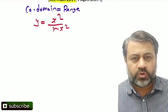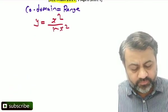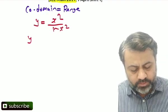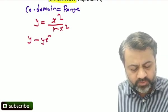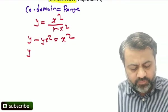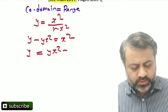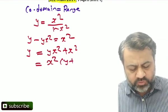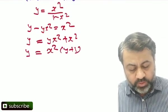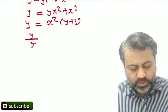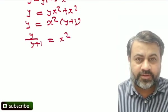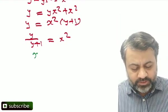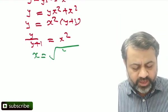So let's do the cross multiplication and simplify. We get y - yx² = x². Let me take y = yx² + x². Now I can take x² common, so in bracket we have y + 1. Now what we can do next? I can write y/(y+1) = x². That means x is nothing but square root of y/(y+1).